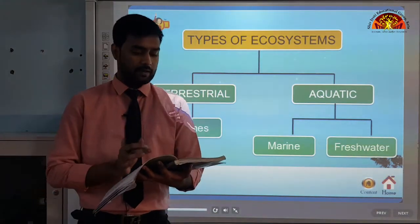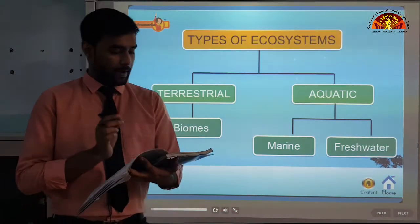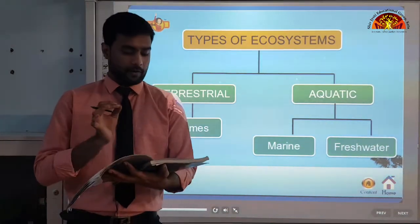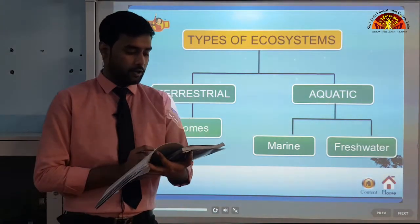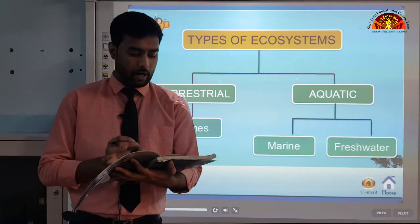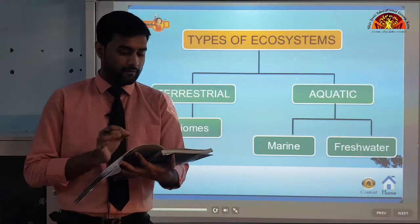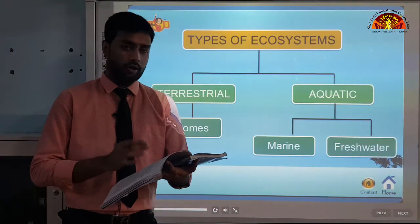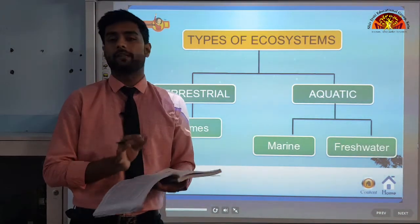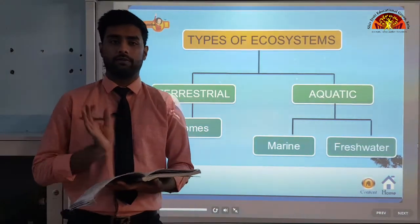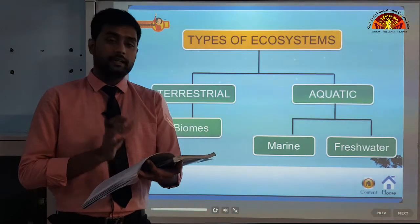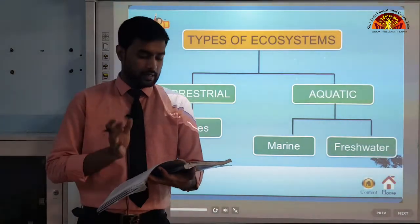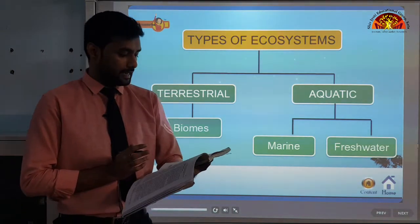A biome is a plant and animal community that covers a large geographical area. The boundaries of different biomes on land are determined mainly by climate. A biome can be defined as the total assemblage of plant and animal species interacting within specific conditions. Conditions affecting the climate of a biome include rainfall, temperature, humidity and soil. The major biomes of the world are forest, grassland, desert and tundra.